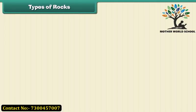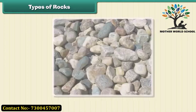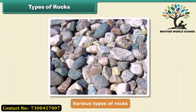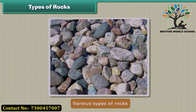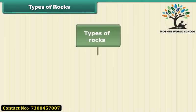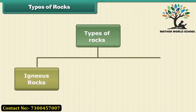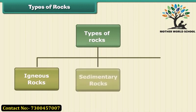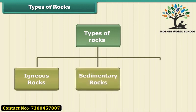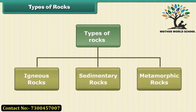We now know that the earth's crust is made up of various types of rocks. The three major types are igneous rocks, sedimentary rocks, and metamorphic rocks. Let's study about them in detail.